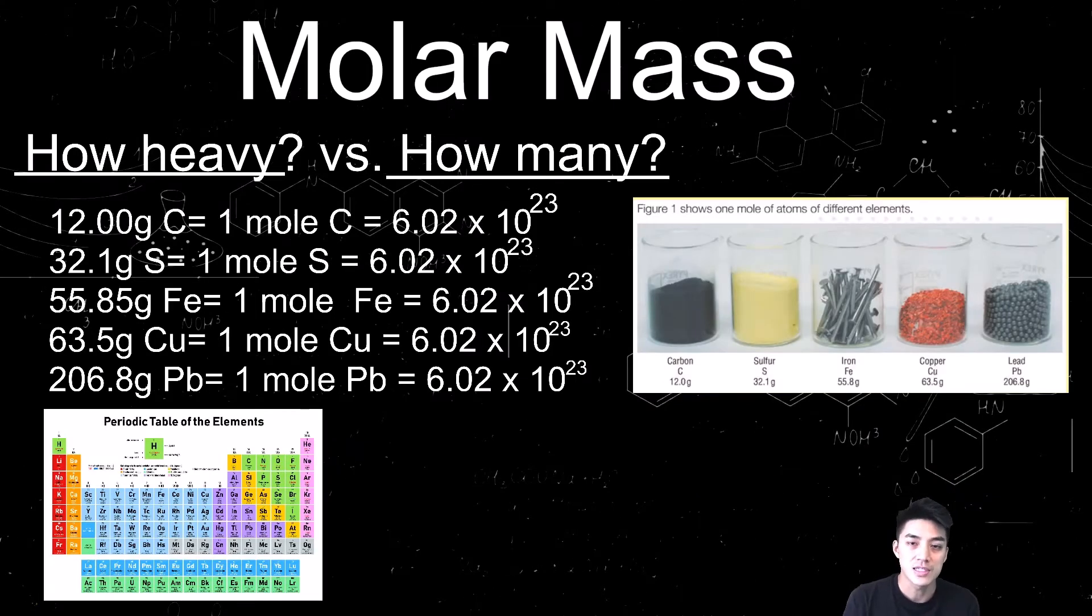So we can extend this idea of how heavy versus how many from the bananas straight to chemistry. So in chemistry, instead of using dozen, instead of using ream or gross or pairs, we use the mole to count atoms because atoms are so small and there's so many of them. So we're going to extend this idea of how heavy versus how many just by looking at one mole samples of just various elements.